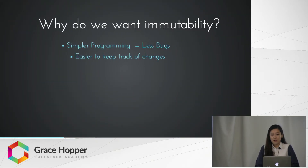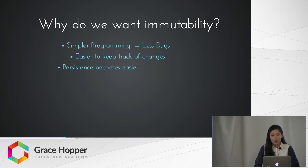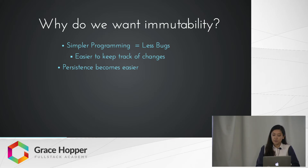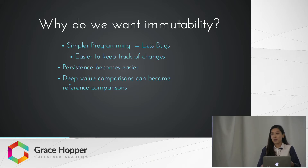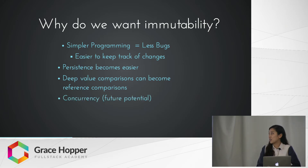So why do we want this to happen? Well, if you want simpler programming, you want immutability. Because if you have a lot of different methods making changes to your data structure, you might lose track of what's making that change, and it's harder to debug. Also, persistence becomes easier because you can keep track of your old objects or data structures as well as the new ones you've created. Deep value comparisons are also easier because you can just compare the place in memory where these data structures are — when you're creating a copy, you're creating a new data structure in memory, so you can compare where they are. It also has some future potential for simplifying concurrency in JavaScript.